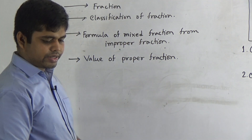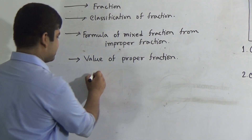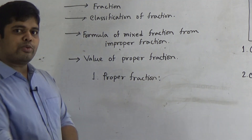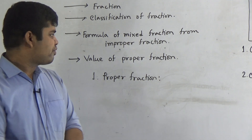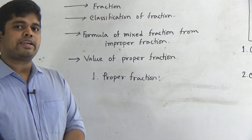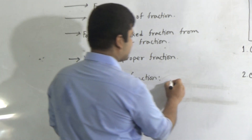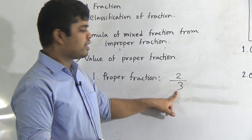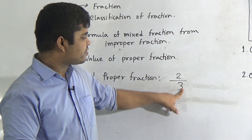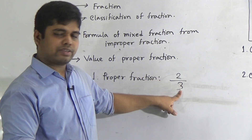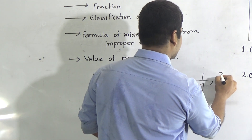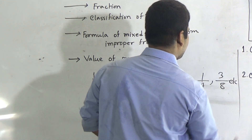There are 3 types of fraction. Number one is proper fraction. When the numerator is smaller than the denominator, that type of fraction is called a proper fraction. For example, 2 by 3 — here 2 is the numerator and 3 is the denominator. Since 2 is less than 3, this is a proper fraction. Similarly, 1 by 4, 3 by 8, etc.